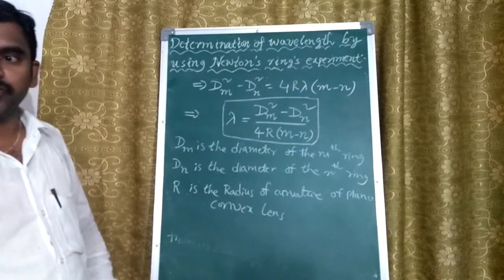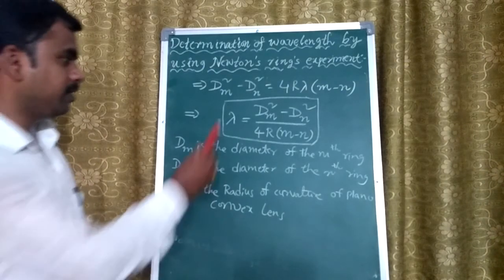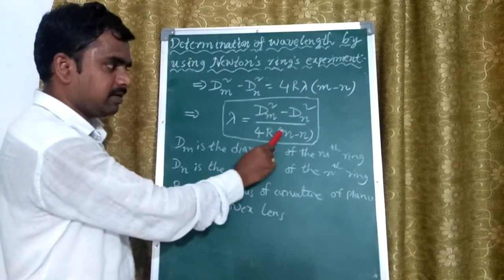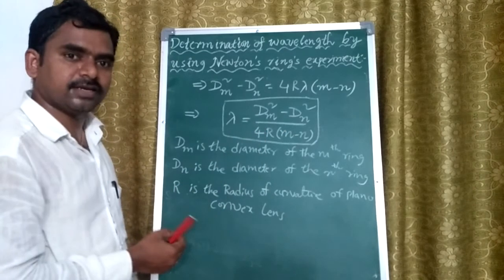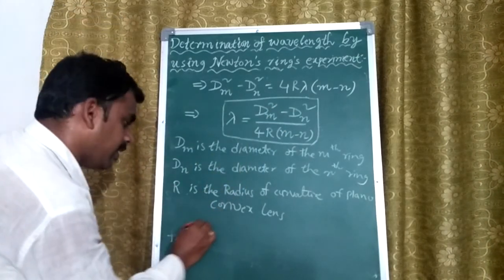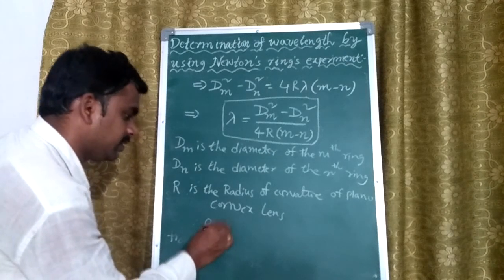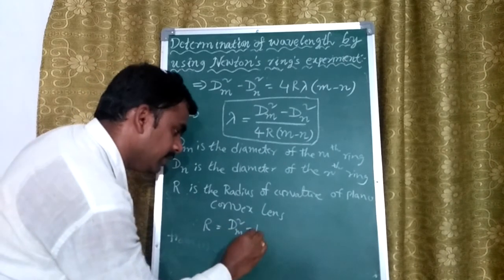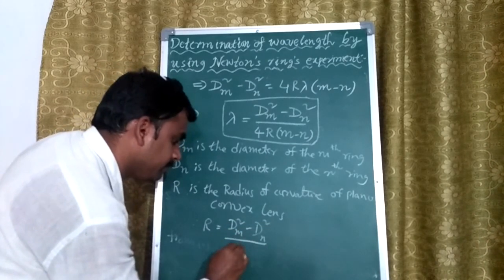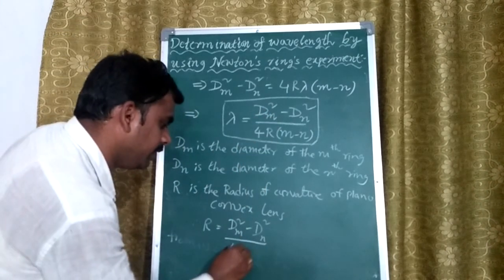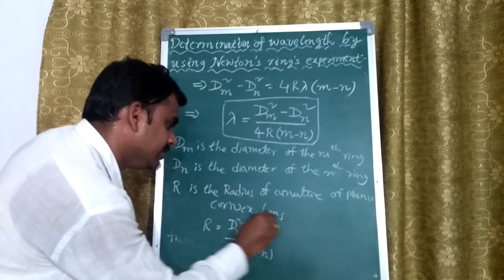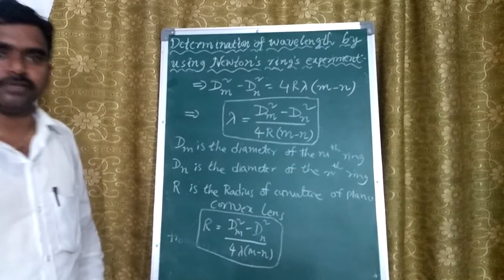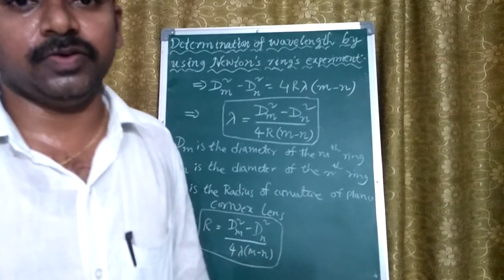Suppose if the wavelength, diameters, and number of the rings are given, and you want to calculate the radius of the given planoconvex lens, then R equals (d_m squared minus d_n squared) divided by 4·λ·(m minus n). This is the formula for determining the radius of curvature of the planoconvex lens using the Newton's rings experiment. Thank you.